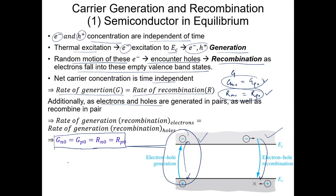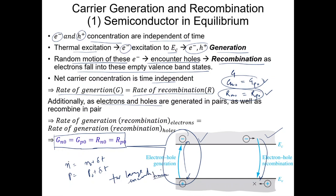In thermal equilibrium conditions, if we write n equals n₀ plus delta n and p equals p₀ plus delta p, for a large enough time, delta n and delta p would be negligible. Therefore, one can consider the equilibrium condition where the total electron or hole concentration does not change as a function of time — that is the condition when generation rate equals recombination rate.